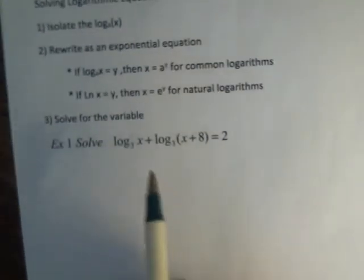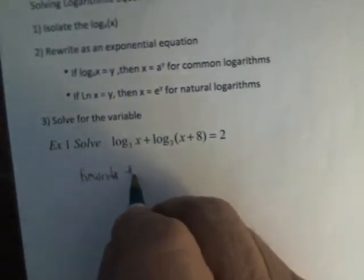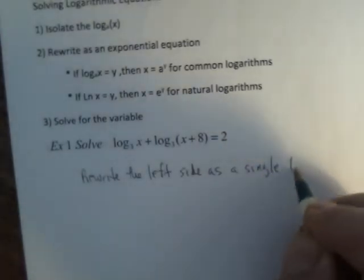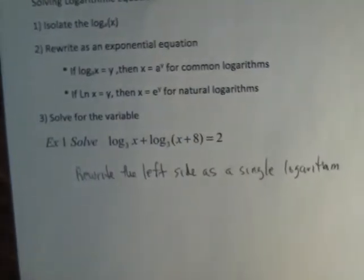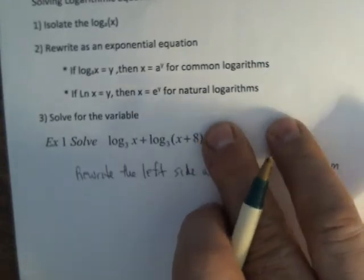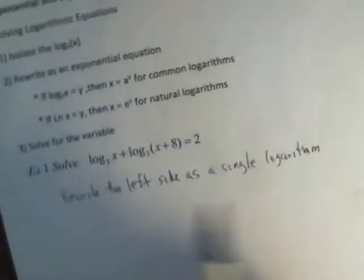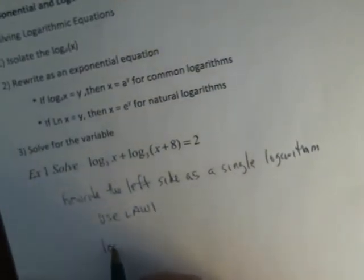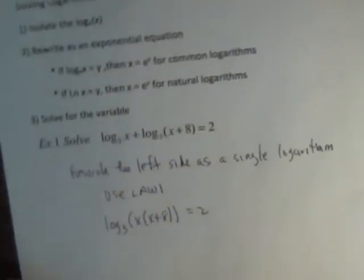So if I'm looking at this example right here, and I want to solve for x, I cannot change it to a logarithm. So what I do is, I rewrite the left side as a single logarithm. It's what we did in class last time. So I'm not worried about this equal sign here yet. I'm looking at this expression, and this resembles law 1. So I will use law 1. So that gives me a single log. My base is 3 of x times x plus 8, which gives me 2.